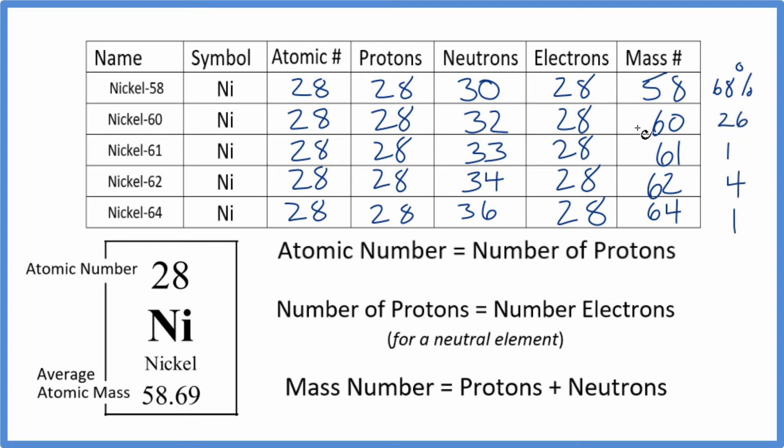When we add these all up and take the average, the weighted average, based on the abundance, so most of it would be nickel-58, that's what gives us this average atomic mass here. So 58.69, that's the average atomic mass. And that's the average of these isotopes based on how much are present, the abundance.